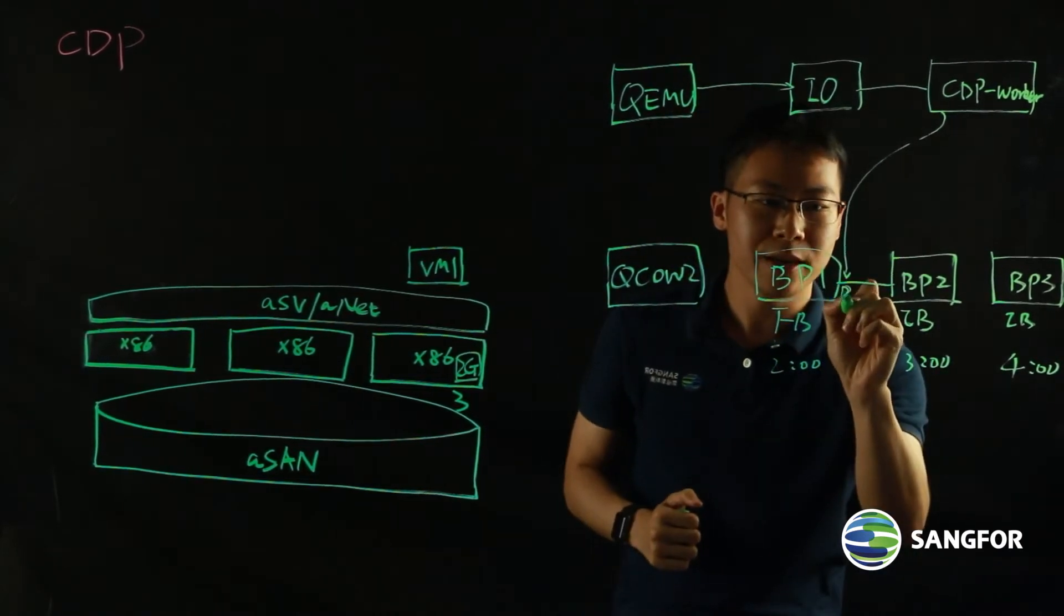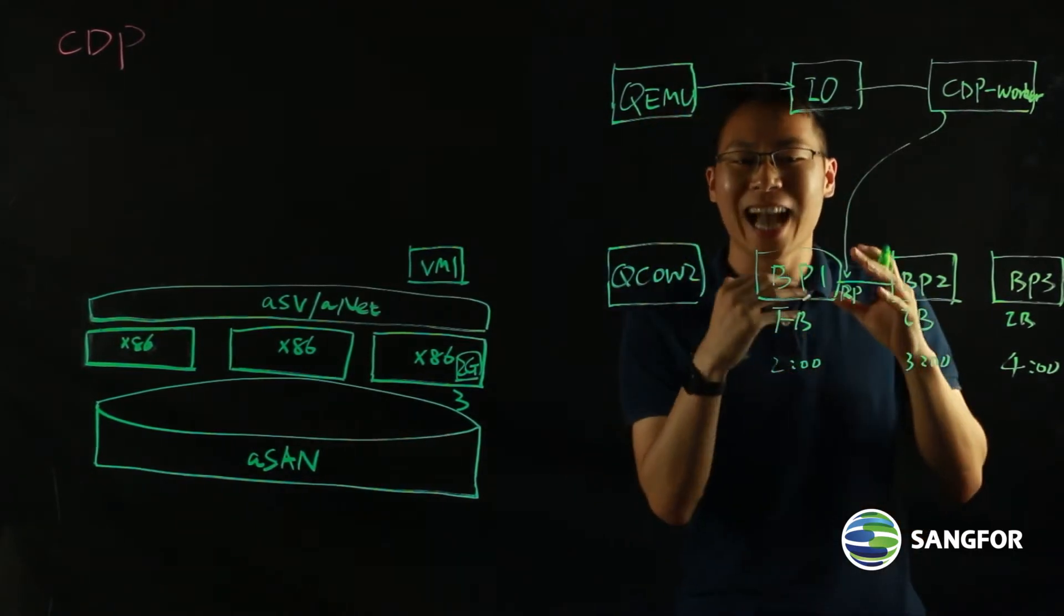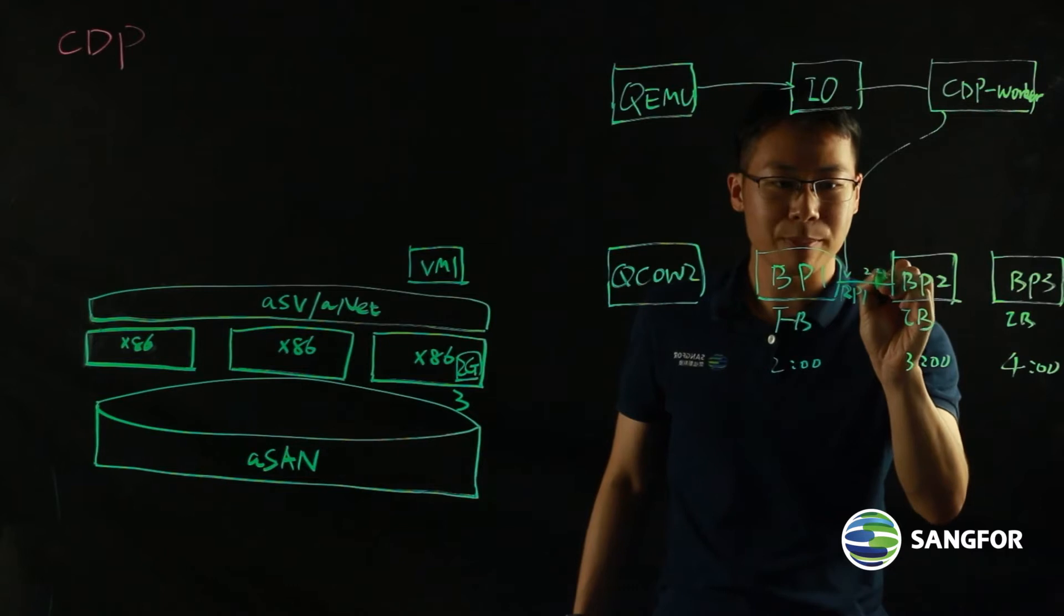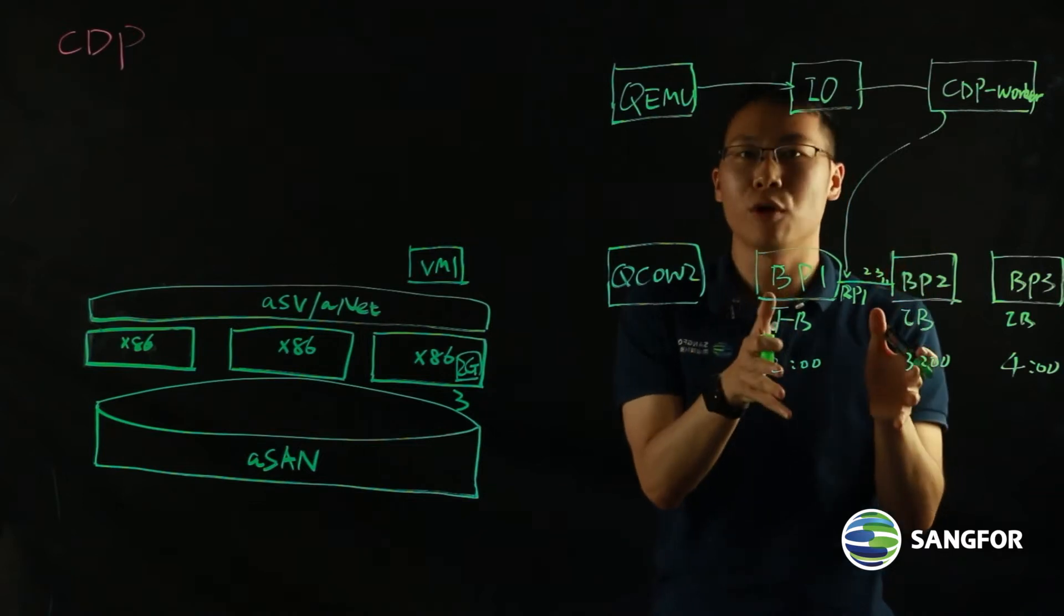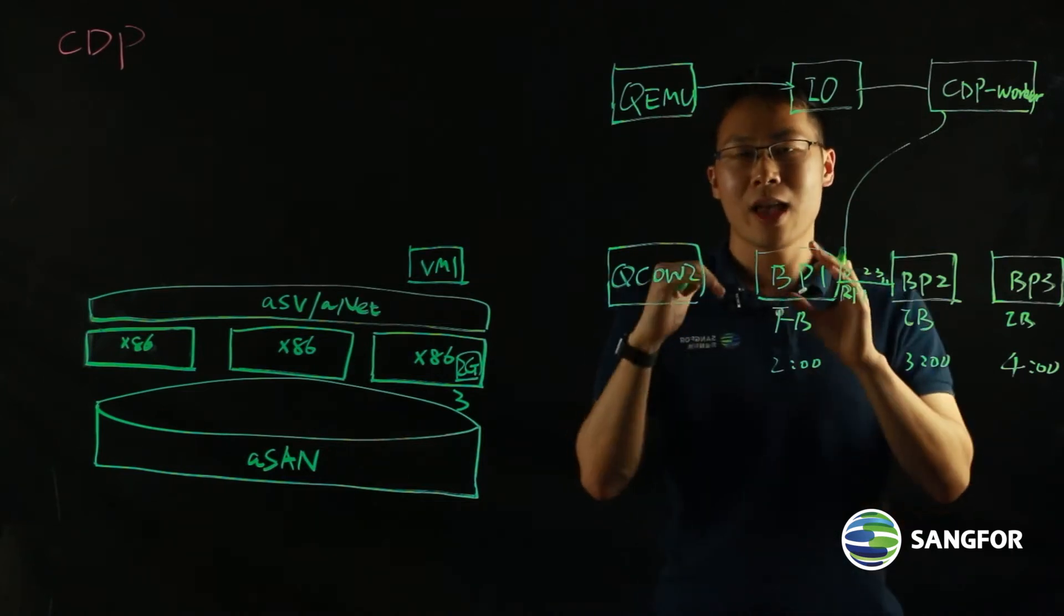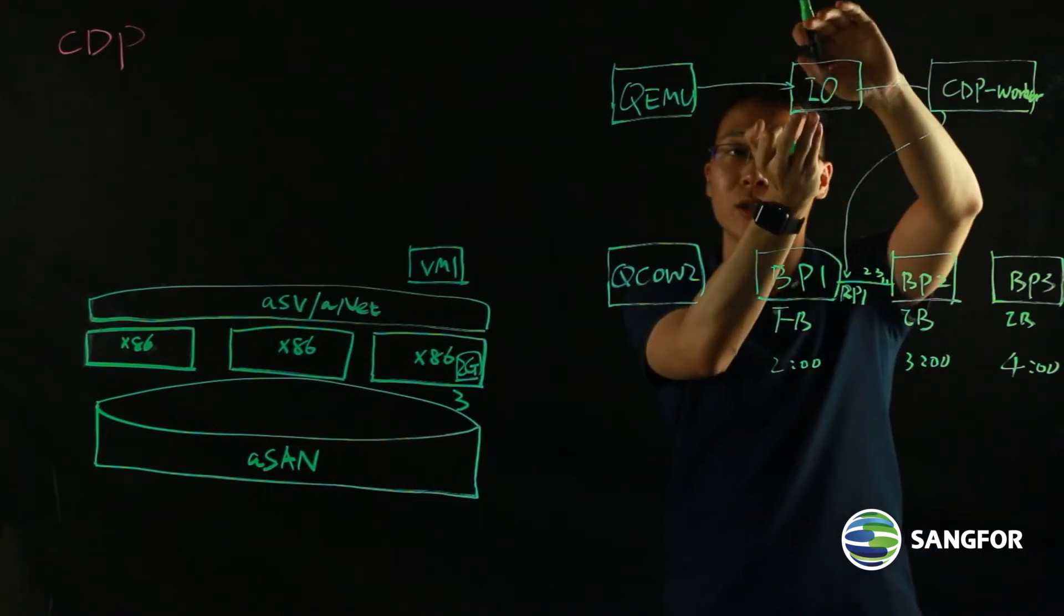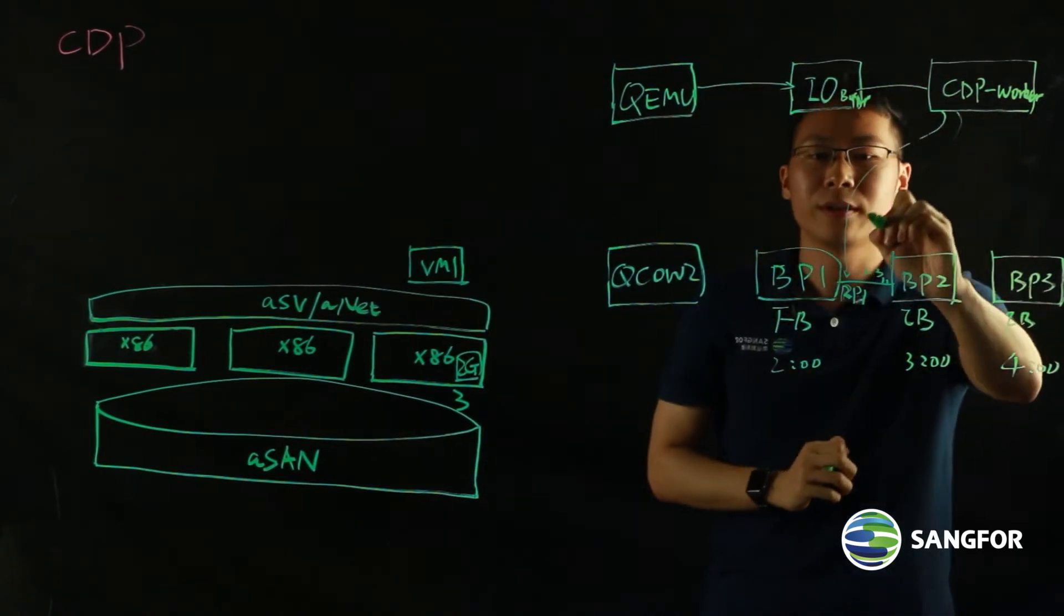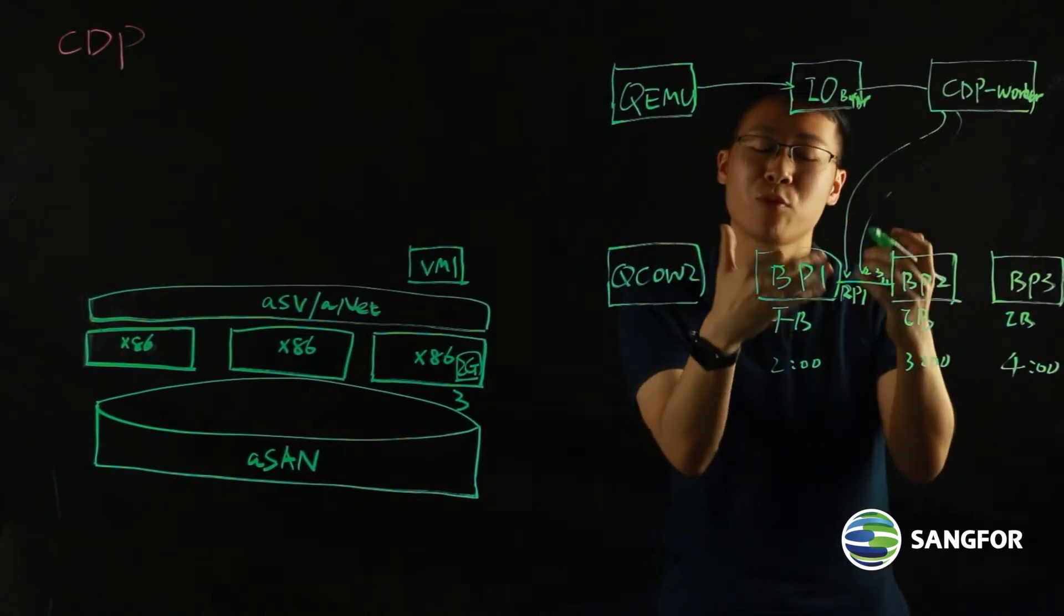the CDP worker will distribute all those IOs. If I configure the CDP policy to be one second, then there will be an RP recovery point, which is the point of time where the IO is happening. There could be RP1, RP2, RP3. And within this one hour interval, there could be 3600 recovery points created. That means every one second, your IO will be cached to the IO buffer.